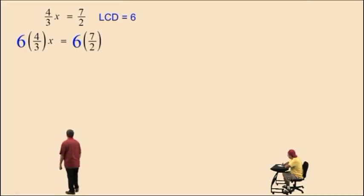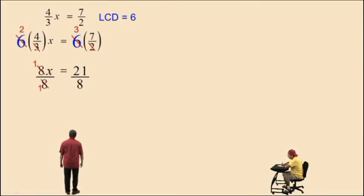So watch what happens here. We have 6 divided by 3 is 2. 2 times 4 is 8. Don't forget, it's 8x. On the right-hand side, 6 divided by 2 is 3. 3 times 7 is 21. Now, to isolate the variable term, we divide both sides by 8, and 8 divided by 8 is 1. So that gives you the 1x on the left-hand side, and the right-hand side is 21 over 8, and that is your solution.